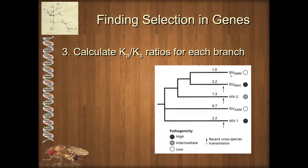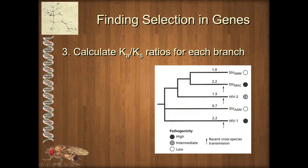HIV evolved from a virus common to hominids — the simian immunodeficiency virus probably jumped over through use of bushmeat and blood-to-blood contact during butchering. There appear to be two unique instances of introduction into humans, giving us HIV-1 and HIV-2 with slightly different epidemiologies and virulence. What we see — not an unusual thing — is evidence for strong positive selection after the virus jumps into humans. This may also be occurring with the coronavirus, though the time period is very short.